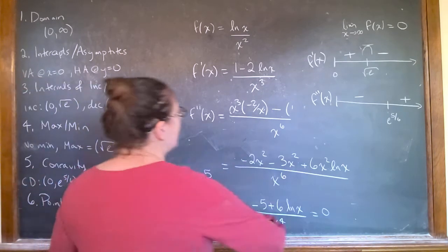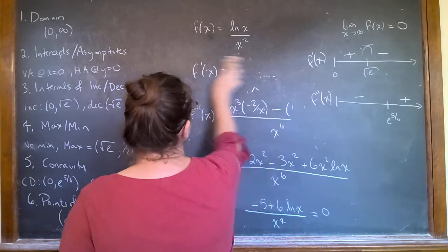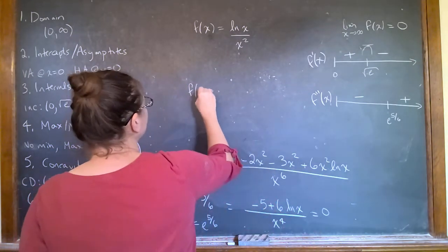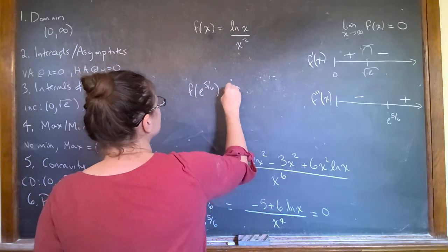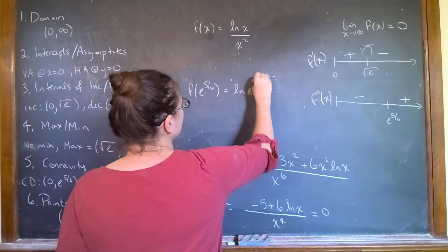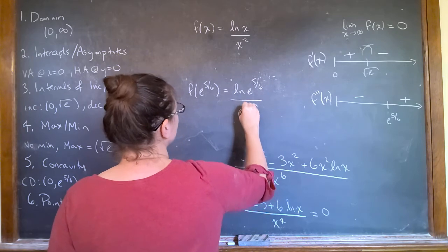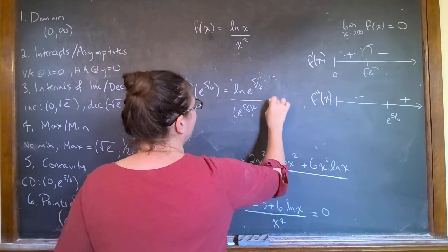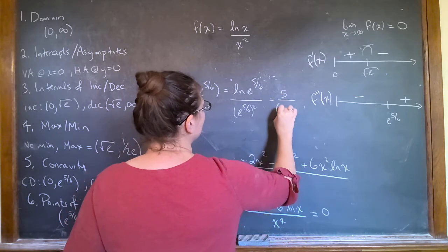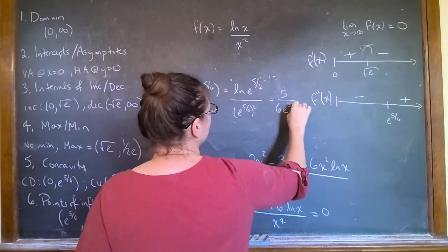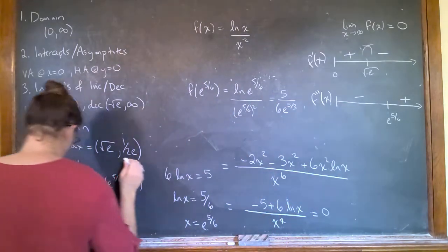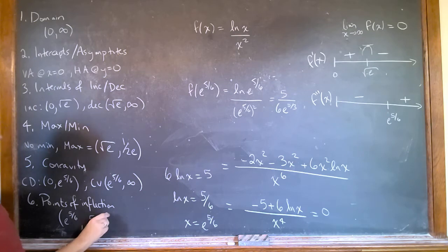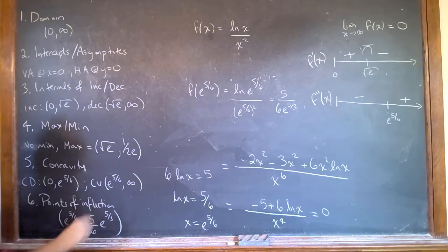And let's see what the x coordinate is going to be. F of e to the five sixths. So natural log of e to the five sixths over e to the five sixths squared. So five over six e to the five thirds.